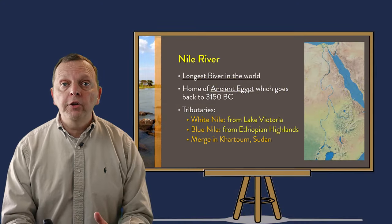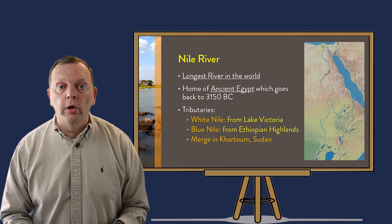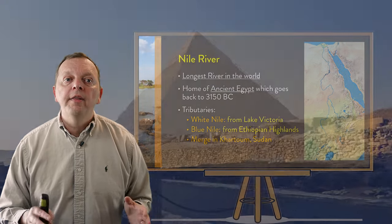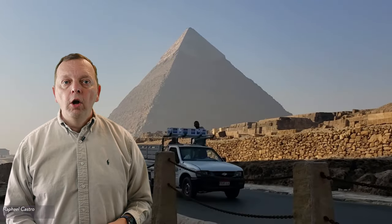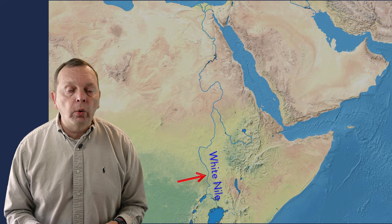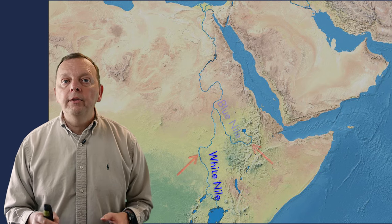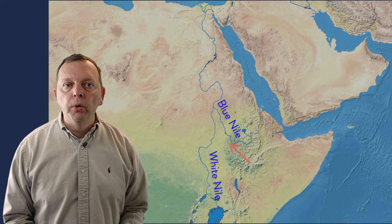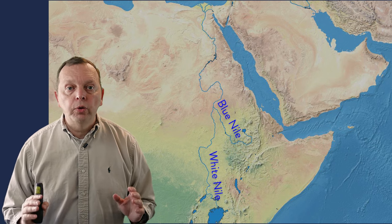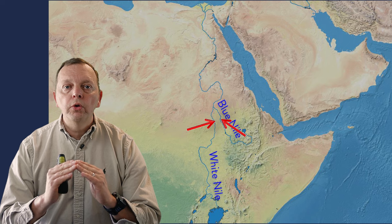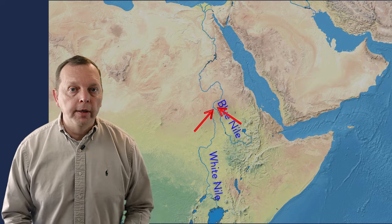Flowing through Egypt is the Nile, the world's longest river. Flowing from south to north, it is along the Nile's banks that the ancient Egyptian civilization and their pyramids are found. The Nile begins in Uganda, where Lake Victoria feeds the White Nile, and in Ethiopia, where waters from the Ethiopian highlands feed the Blue Nile. The Blue and White Nile tributaries flow northward until they merge in Khartoum, Sudan, and become the Nile River.